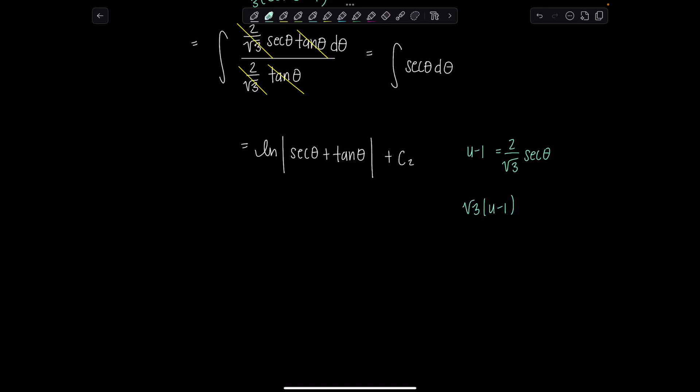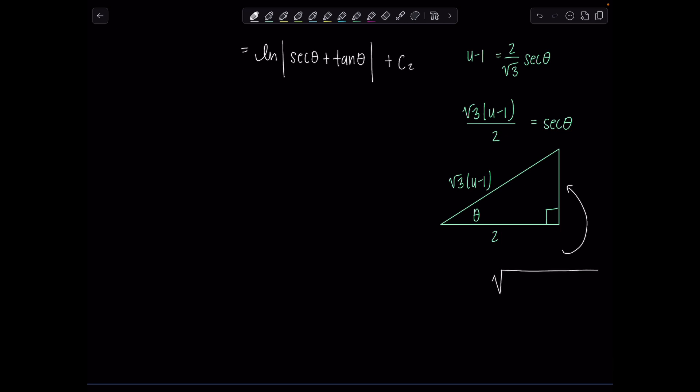Secant theta is the ratio of the hypotenuse over the adjacent side. So here's my hypotenuse, rad 3 u minus 1. Here's the adjacent side. Here's theta. And then using the Pythagorean theorem, I could figure out what the missing side is. So this side here is going to be the square root of the hypotenuse squared, 3 times u minus 1 squared minus the adjacent side squared, which is 4.